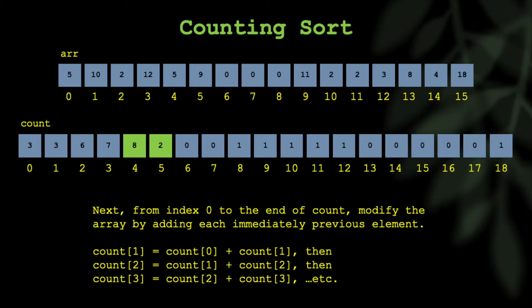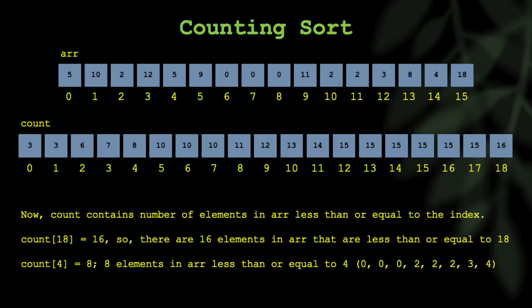Then I have 7 and 1, and count[4] becomes 8. You proceed in this way until you get to the end of the array. Once you've done that, count contains the number of elements in the input array that are less than or equal to the index. So for example, count[18] equals 16. That means there are 16 elements in the input array that are less than or equal to 18. And if you look at count[4], that equals 8. What that means is there are 8 elements in the input array that are less than or equal to 4. And we can see those are 0, 0, 0, 2, 2, 2, 3, 4. Indeed, there are 8.